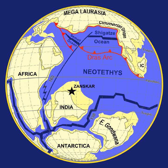Greenstone belts are typical Archean formations, consisting of alternating high- and low-grade metamorphic rocks. The high-grade rocks were derived from volcanic island arcs, while the low-grade metamorphic rocks represent deep-sea sediments eroded from the neighboring island rocks and deposited in a forearc basin. In short, greenstone belts represent sutured protocontinents. The Earth's magnetic field was established 3.5 billion years ago.